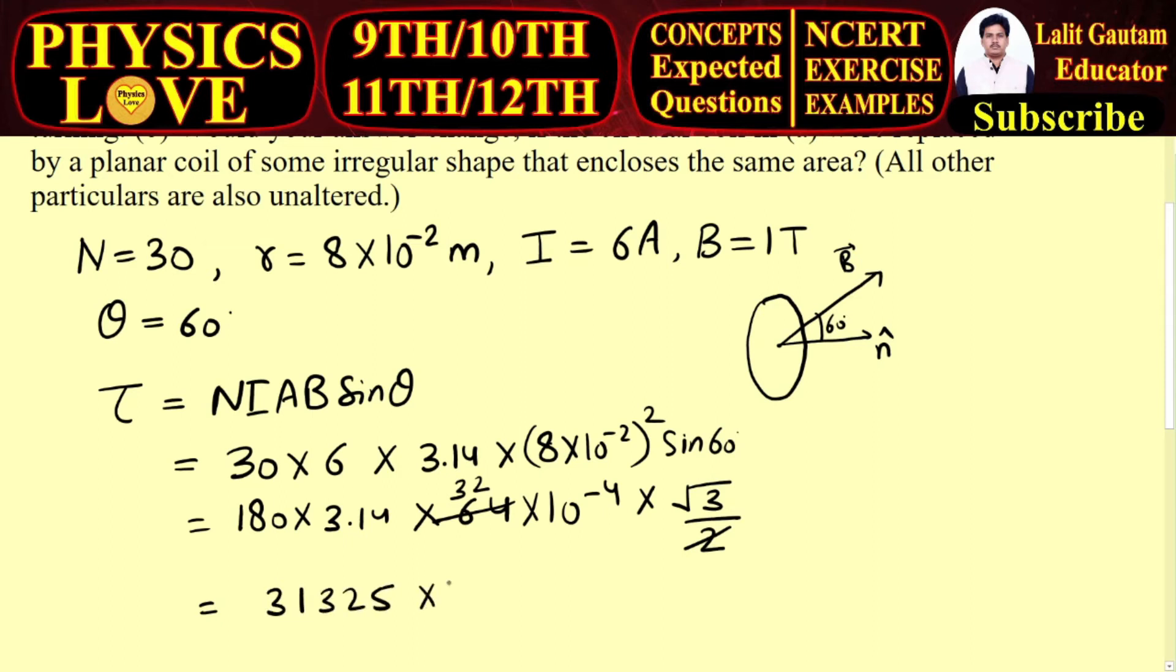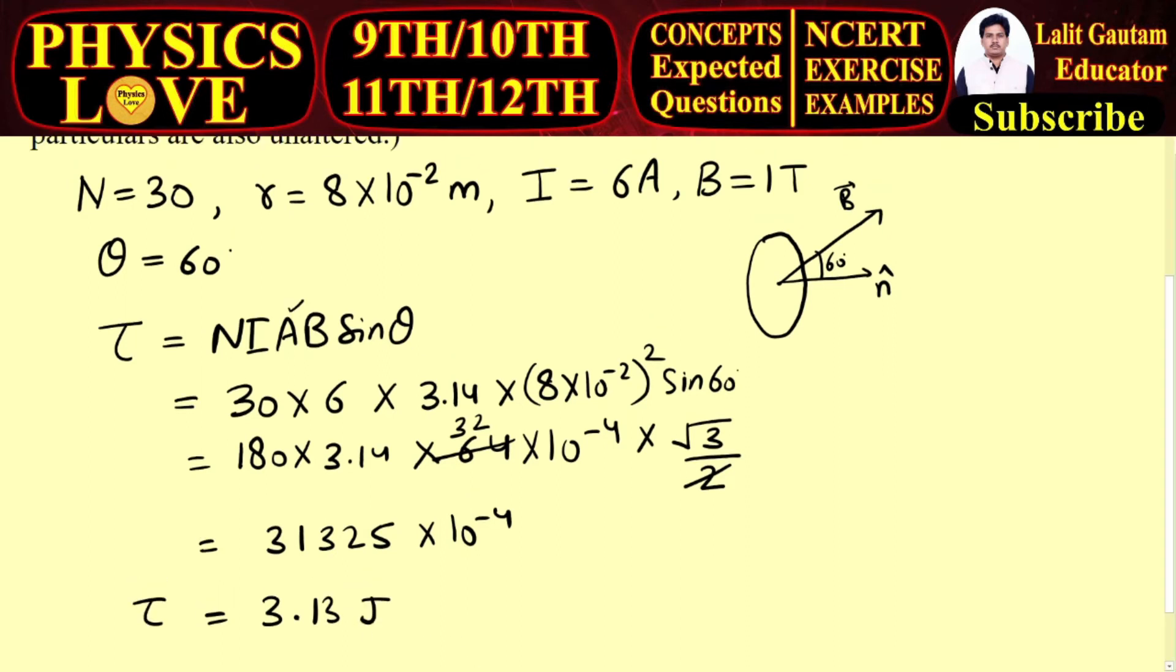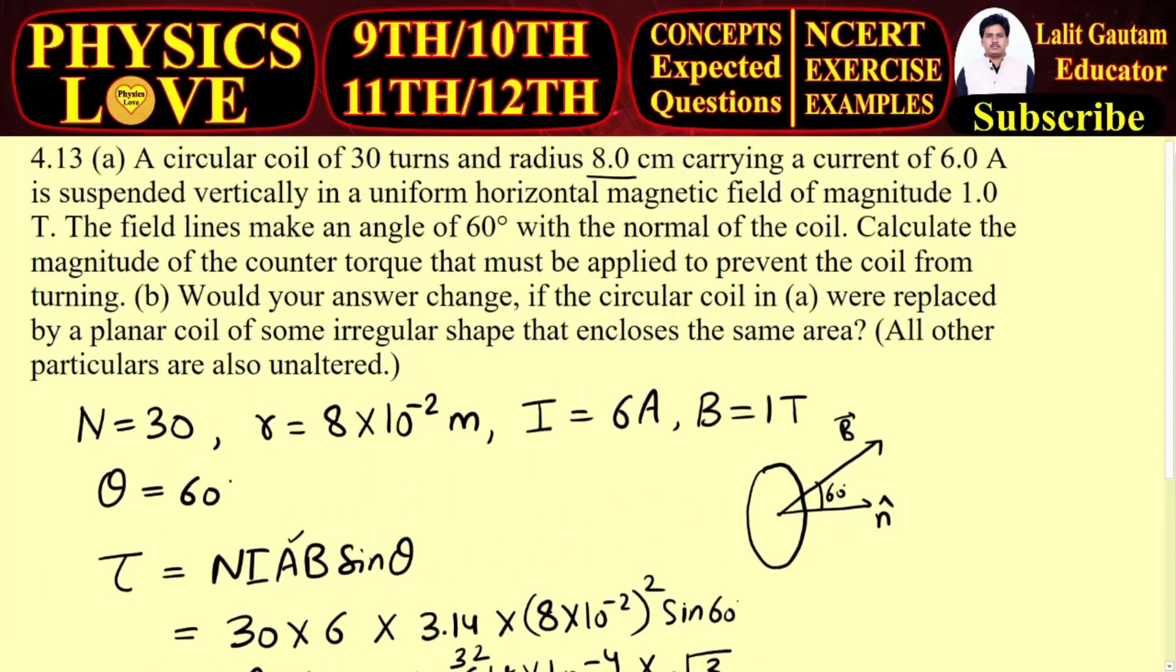31,325 × 10^-4, so I can write here 3.13 joules or newton meters. So this is the anti-torque produced in the coil.